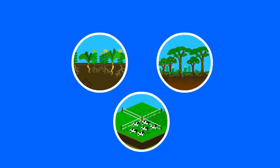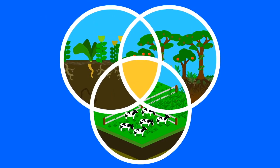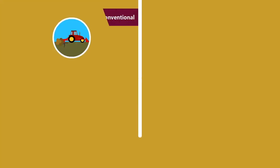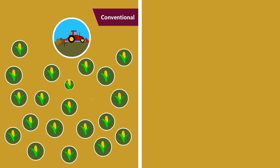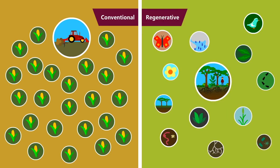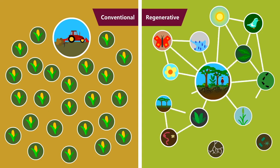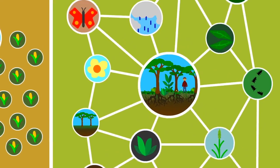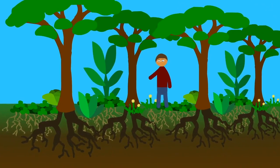These three examples of regenerative agriculture, plus all the rest of them, all have something in common. Whereas in conventional agriculture you seek to create as many of one thing as possible, in regenerative agriculture you seek to create as many relationships between things as possible. You are one of those things. What sort of relationship with the land do you want to foster?